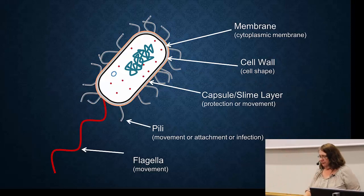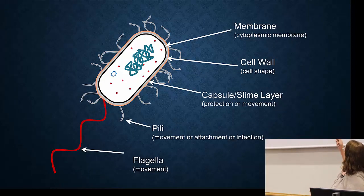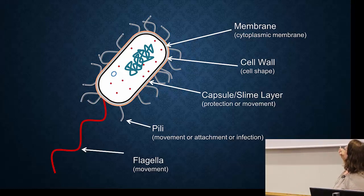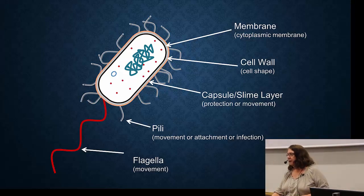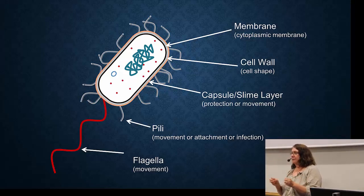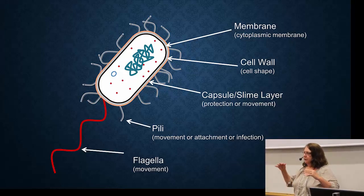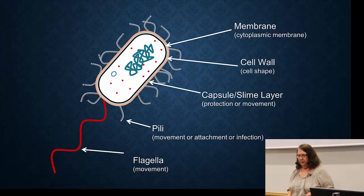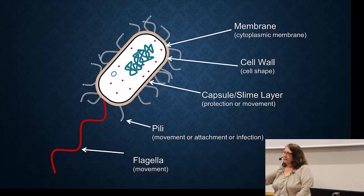Continuing from the outside: we've covered the cytoplasmic membrane and the extra outer membrane for gram-negatives, and the cell wall for cell shape. On top of that, most bacteria also have a capsule or slime layer. The capsule and slime layer serve two functions. One is protection — it's called slime because it's slimy, and some molecules can't pass through it. It also provides protection against various chemicals. Additionally, it can be used for movement; some bacteria slide along surfaces using this slime layer.